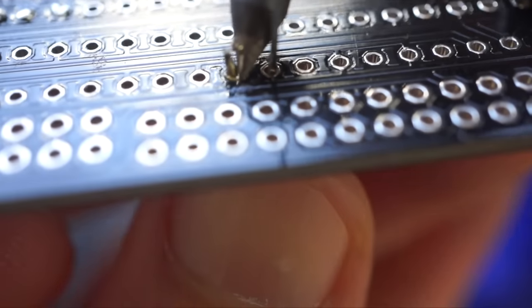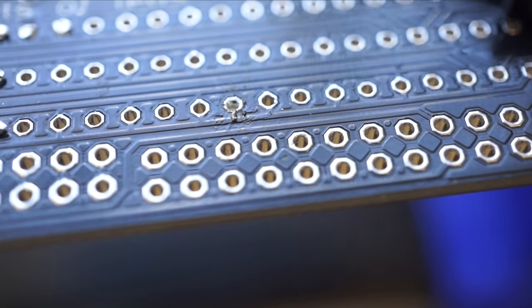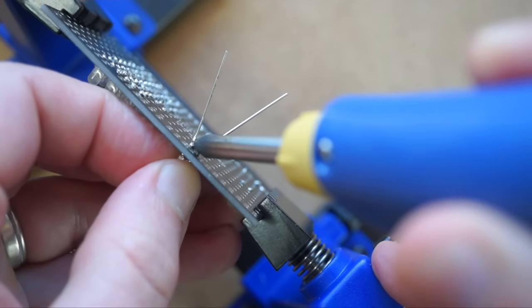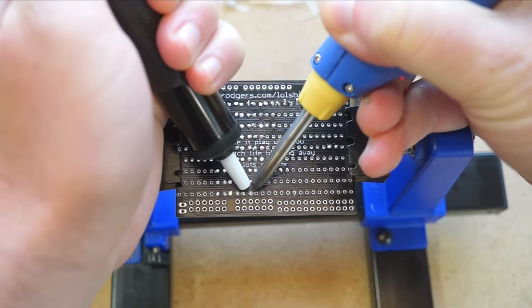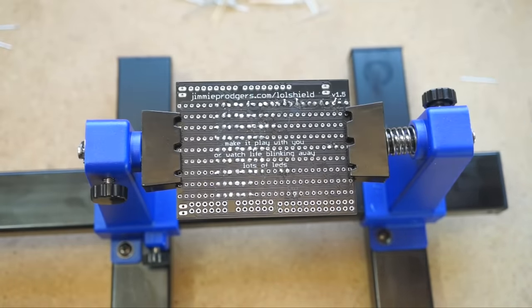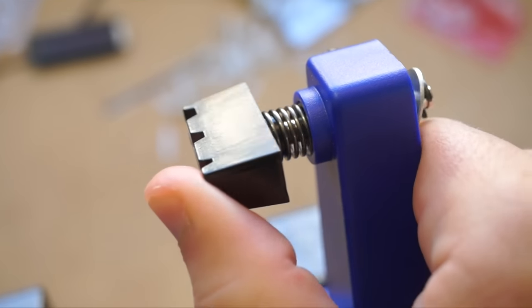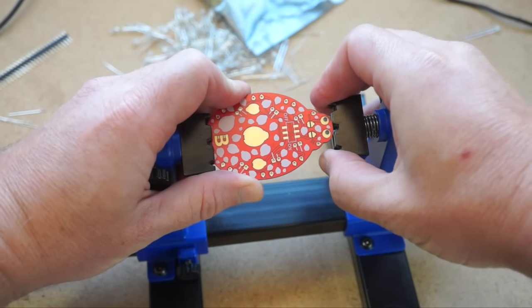The second thing this is great for is desoldering components. If you screw it up and you need to take something out, you can heat on one side and pull or pry from the other. Or if you're using a solder sucker, you can really just rest your hand on this thing and get right up to the spot without having to chase it. That's all there is to it. It's a simple and inexpensive tool, but relatively well built, and I'm surprised I don't see them more often.